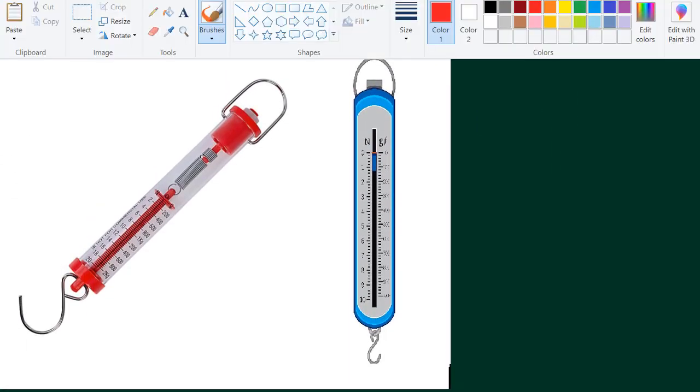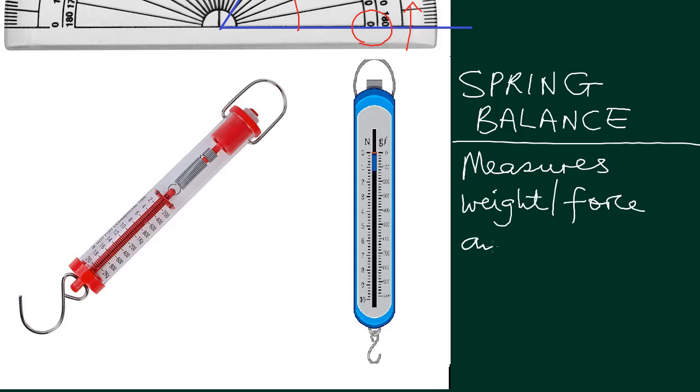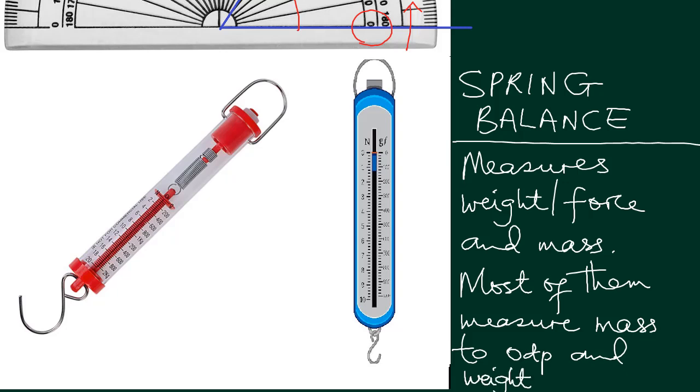The spring balance is the next one. The spring balance is commonly used for measuring actually weight or force, and you can also measure mass. Now depending on which one, I'm not going to be very specific because they have different list counts.